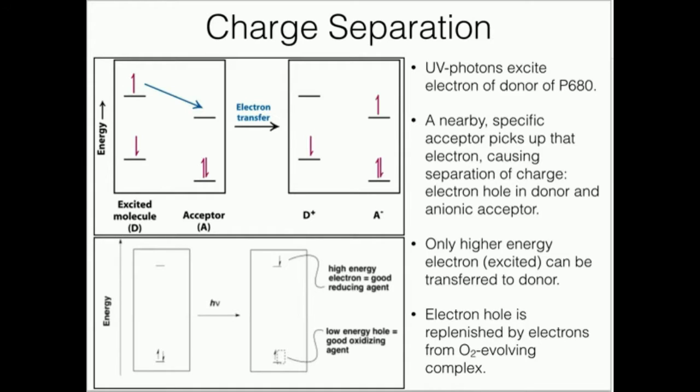The acceptor got an electron, and it turns out it has an A- charge now. It's an acceptor, but it has one more electron, so its charge went down by one.